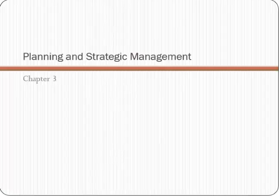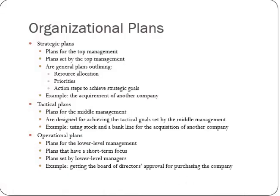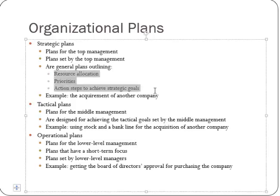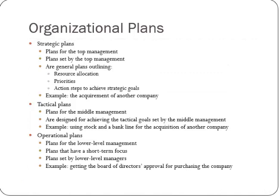Chapter three is about planning and strategic management — an overall way of managing holistically from the top of the company down. Any strategic management starts with an organizational plan. A strategic plan covers the general overall strategy: what to produce, when to produce it, where to sell, where to hire. Then you have tactical plans — how you're actually going to execute. The strategic plan is what you want to do; the tactical plan is how you get there. These are really for middle management and are designed to achieve tactical goals.